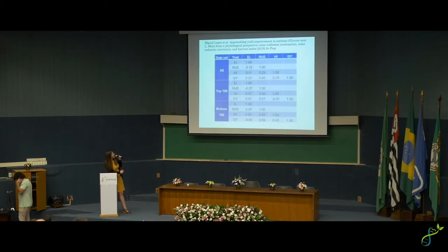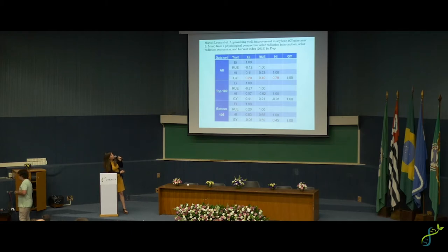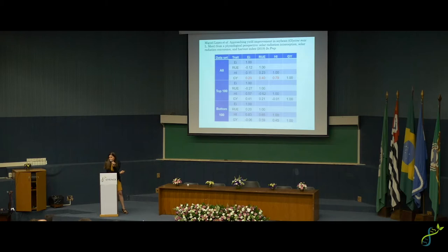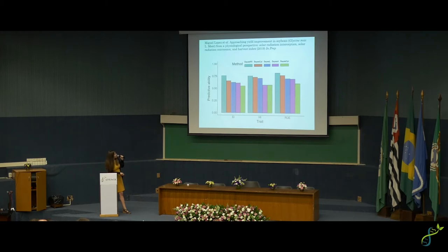These are additive genetic correlations between traits for all approximately 400 lines in the panel and the top and bottom 100 for yield. The correlation between light interception — roughly canopy coverage — and yield goes down when you restrict maturity and have a smaller panel. In the top-yielding 100 lines, you see a decent genetic correlation between grain yield and light interception. These traits were also very predictable using genomic selection, suggesting good potential to improve them.